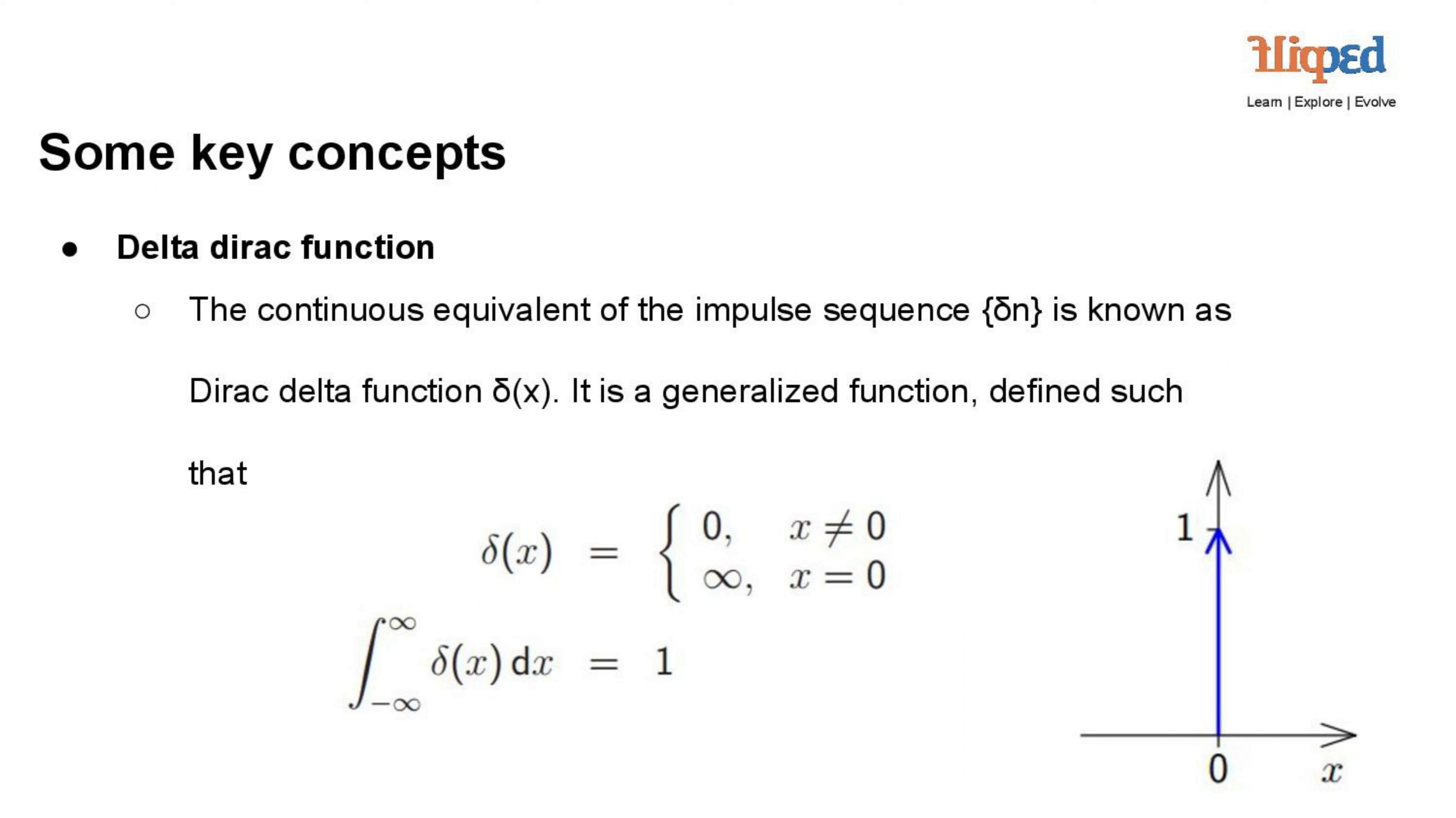The Dirac delta function, denoted as delta x, is a generalized function used in mathematics and signal processing. It is the continuous equivalent of the impulse sequence, delta n.